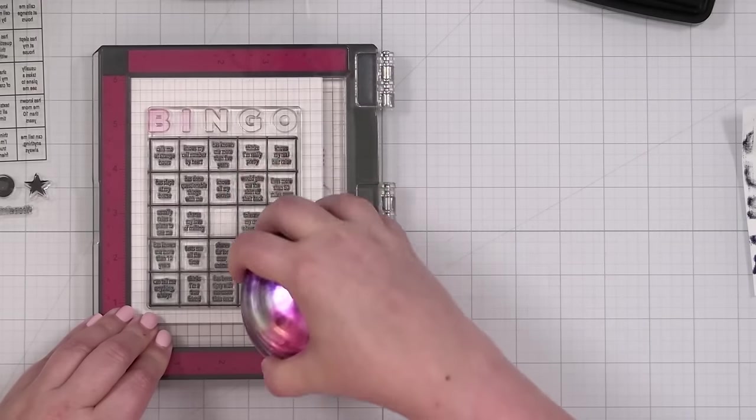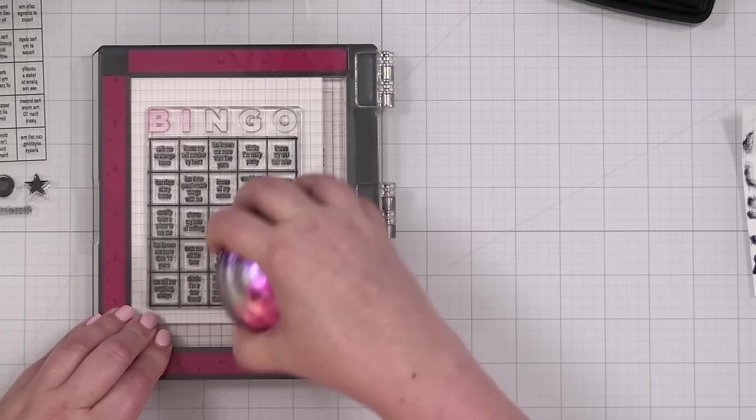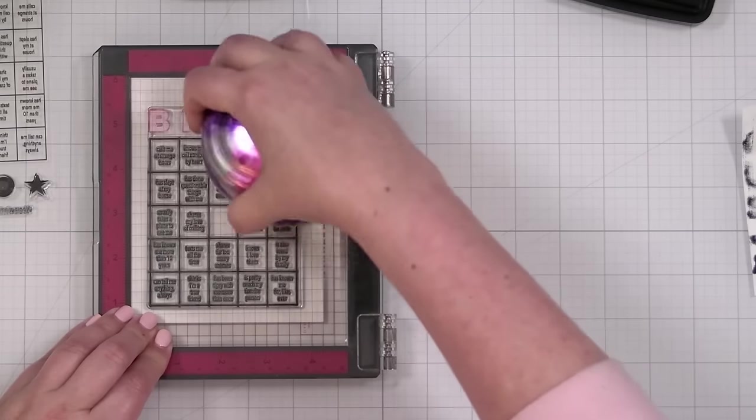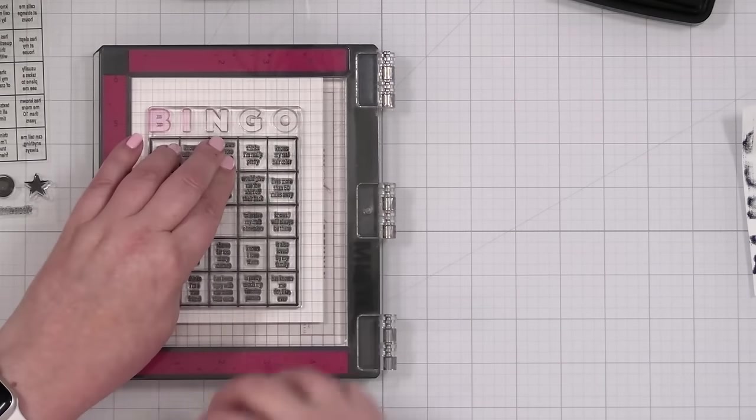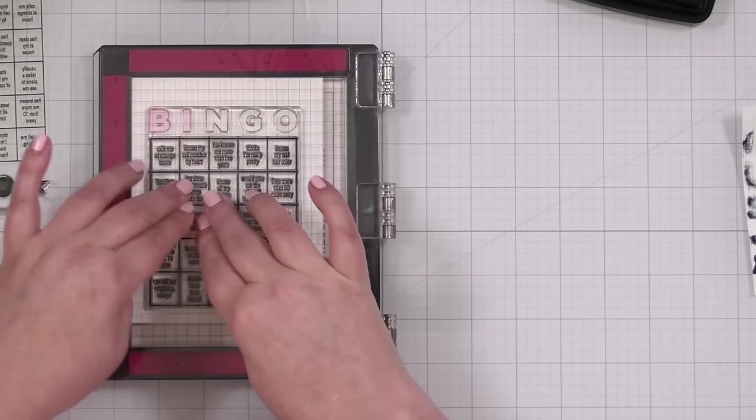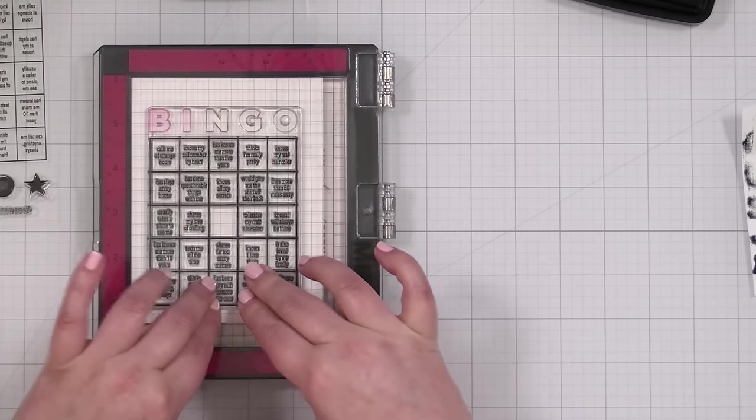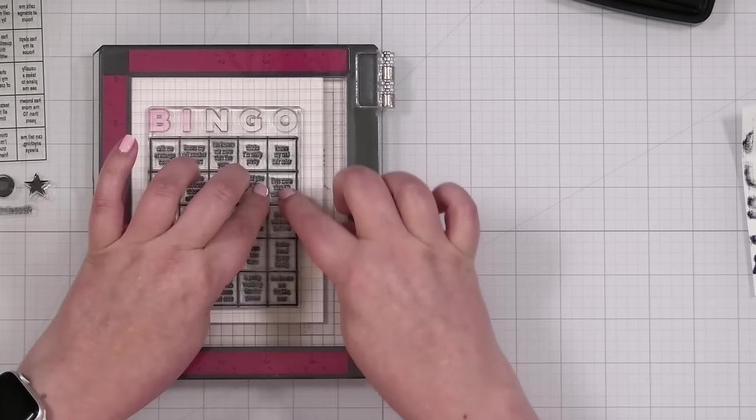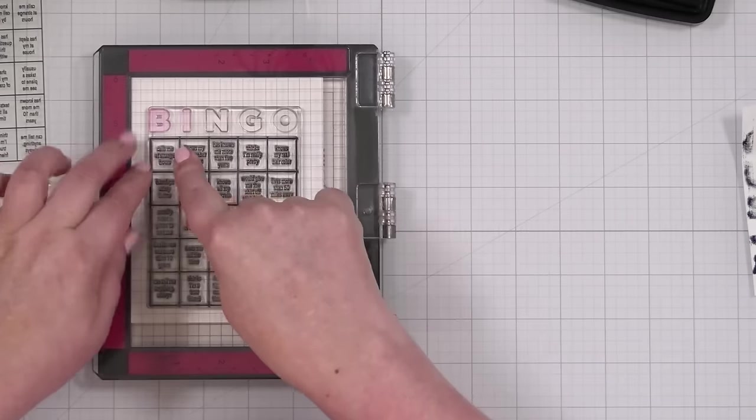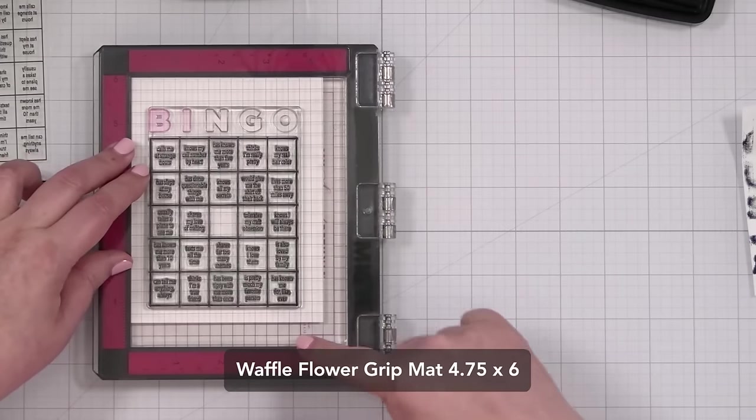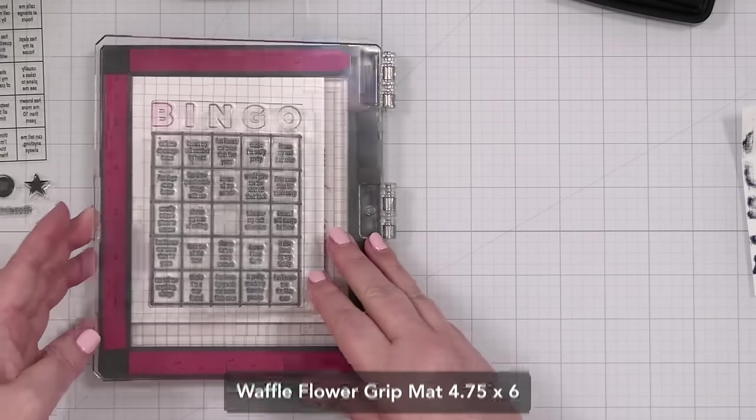Sometimes with the MISTI, you know, there might be areas that don't want to transfer as well. So you just kind of take your time and press. But the beautiful thing is I can stamp this again in the same place. I forgot to mention, I have a waffle flower grip mat. Let's see how that did.